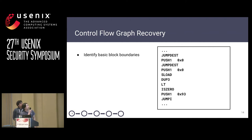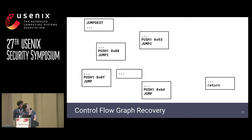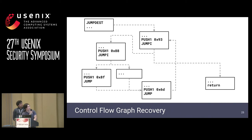First, we recover the control flow graph. We start by identifying the basic block boundaries, which is hugely assisted by the jump destination instructions that mark the beginning of a block. Then we organize the blocks into a control flow graph, essentially emulating the contract execution using a simplified stack model. We explore the contract in a manner similar to DFS, and record the stack images at each block entrance to decide when to backtrack. The algorithm starts from the first block, analyzes the basic block, identifies its successors, adds them to the control flow graph, then recurses on the successor.